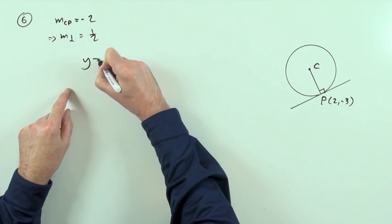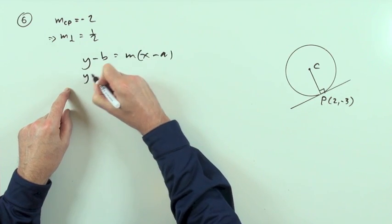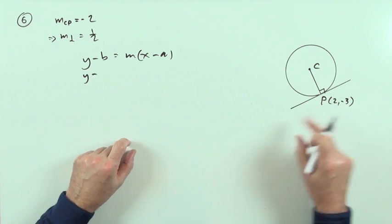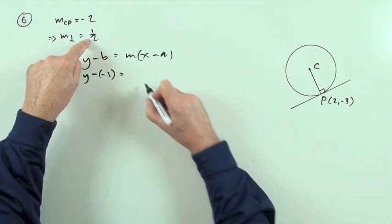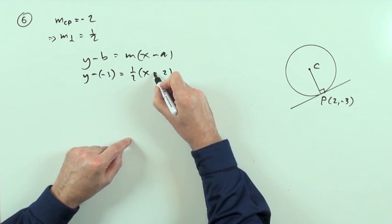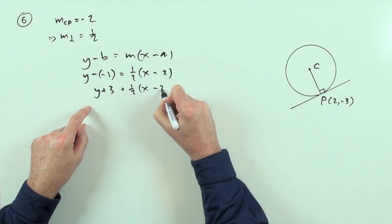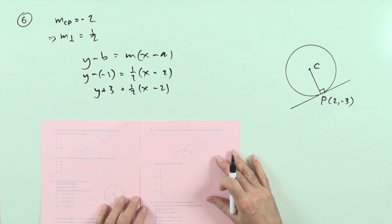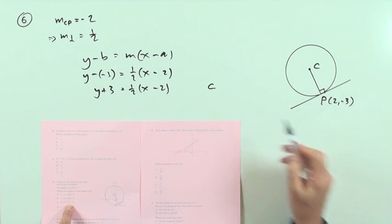So what's the equation of this going to be? Y minus B is M times X minus A. Y minus the Y coordinate of the point, so Y take away negative 3, is the gradient, which is a half, times X minus the X coordinate, which is 2. So you've got Y plus 3 is a half of X minus 2, and it's sufficient to leave it in that form here because there's the answer there, C. So the answer is C.